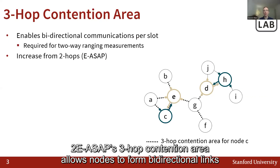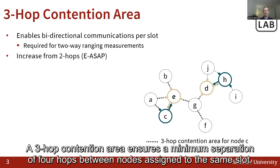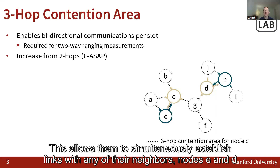2EASAP's 3HOP contention area allows nodes to form bi-directional links that do not interfere with each other during two-way ranging. The 3HOP contention area ensures a minimum separation of 4 hops between nodes assigned to the same slot — for example, nodes C and H.